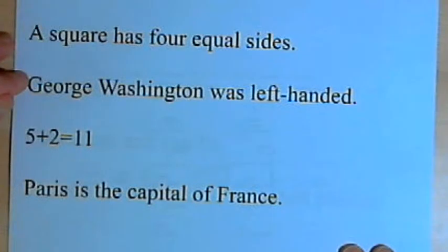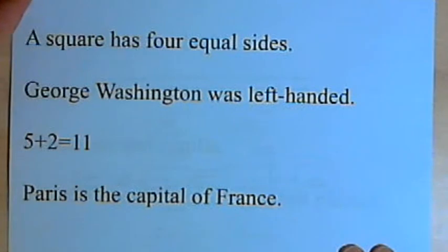George Washington was left-handed. I don't know if he was left-handed, but we could find out. He either was left-handed or he wasn't. 5 plus 2 equals 11 is not a true statement, but since we can determine it's not a true statement, then it's a valid statement for an argument.